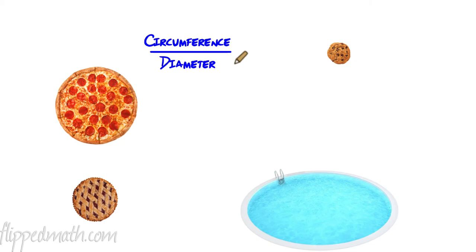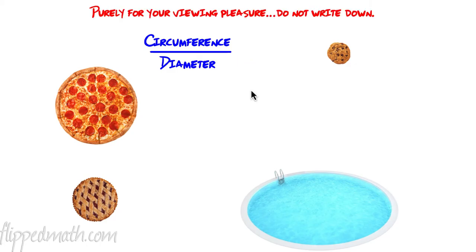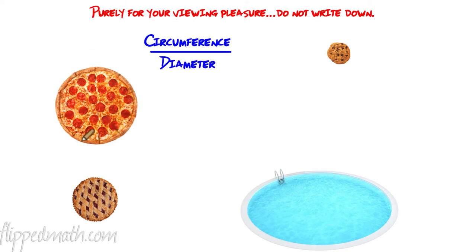Now let's talk about circumference and diameter — these are a little tricky. Way back a long time ago, a thousand years ago, they were doing math and measuring the circumference of circles. They would walk around the outside of a circle — maybe a swimming pool or a pizza — and measure the circumference, then measure the diameter. And here's what they found: whenever they took the circumference of any circle and divided it by the diameter, they always got about the same number.